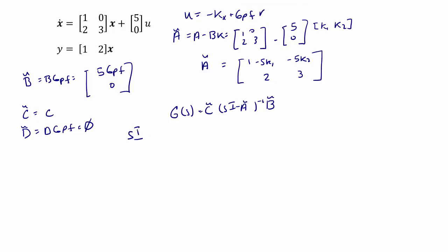s i minus a tilde is equal to [s 0; 0 s] minus [1 minus 5k1, negative 5k2; 2, 3], which equals [s minus 1 plus 5k1, positive 5k2; negative 2, s minus 3].